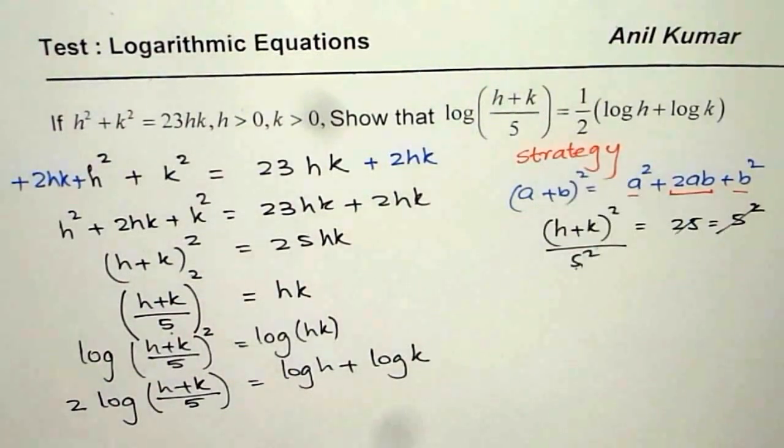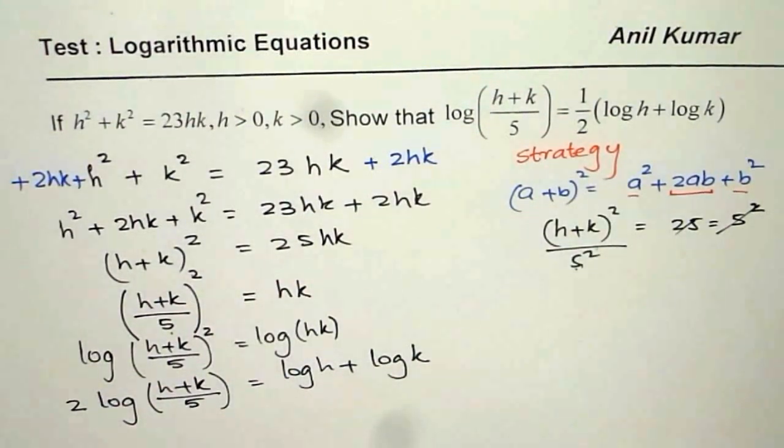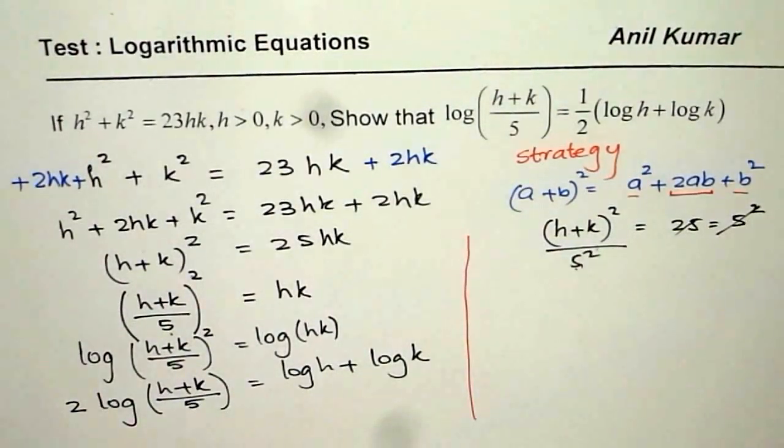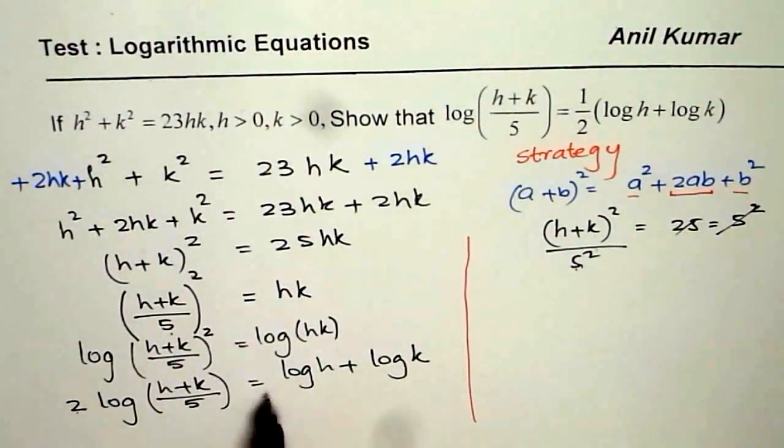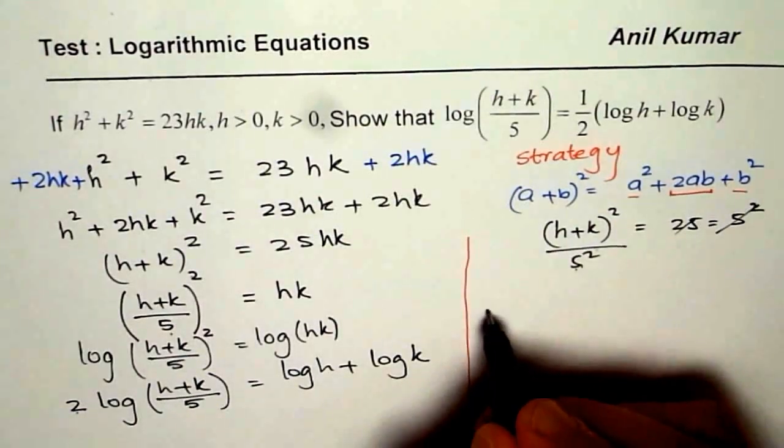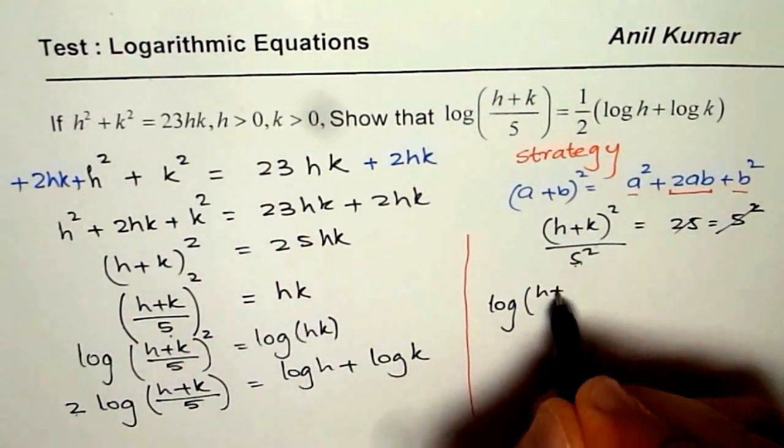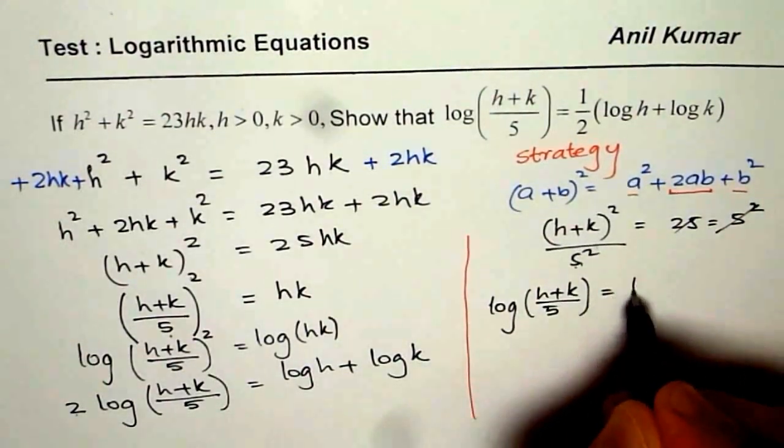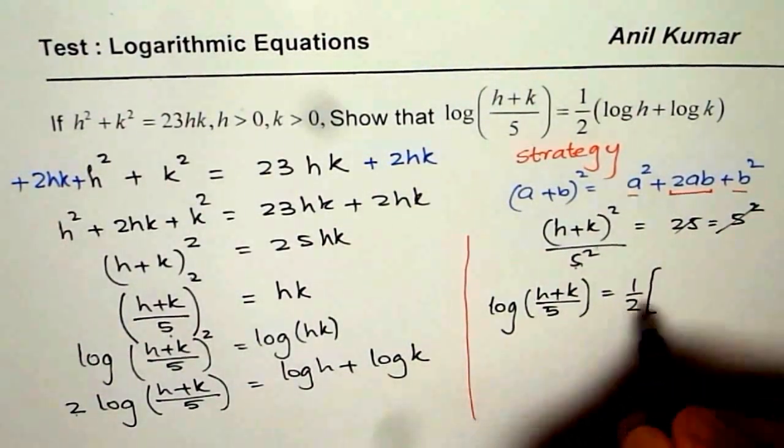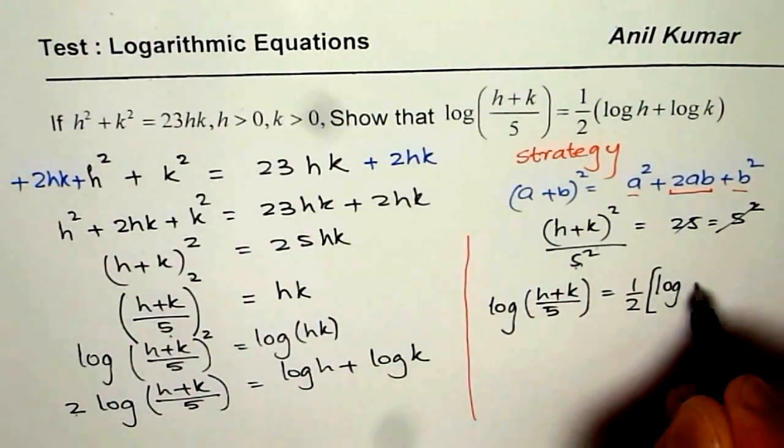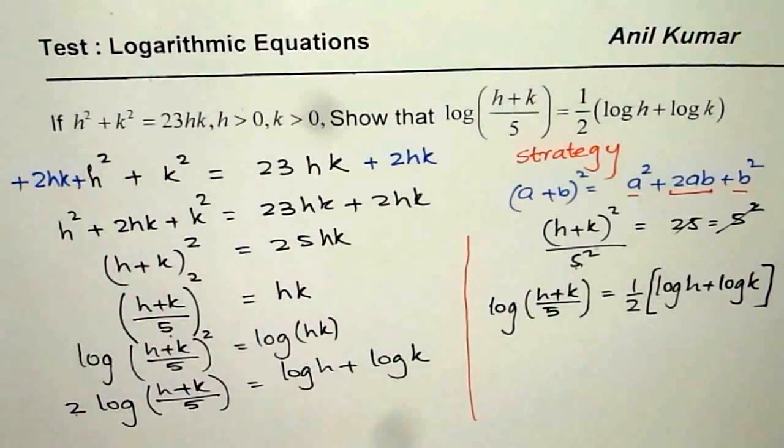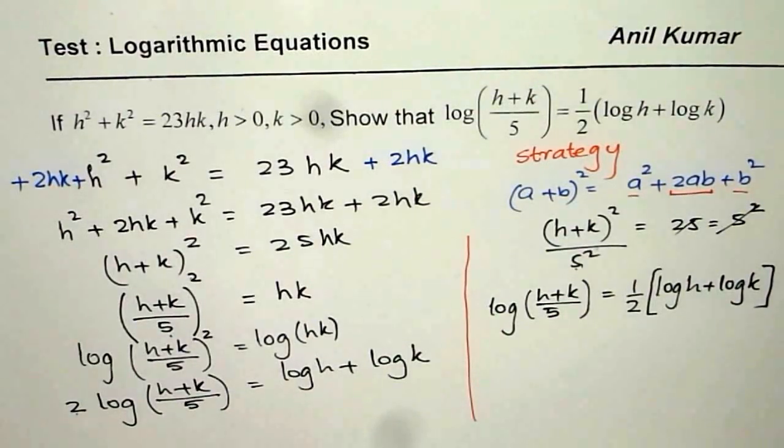Do you get it? Now, we are just one step away. So you can now finish it off. Let me do it here and write your solution. So let's multiply by half on both sides. So what do we get? We get log((h+k)/5) = 1/2(log h + log k). That is what you wanted. Perfect.